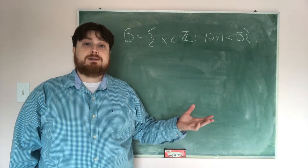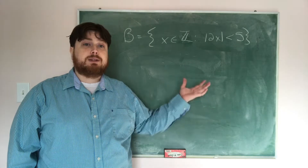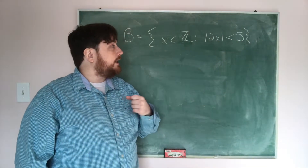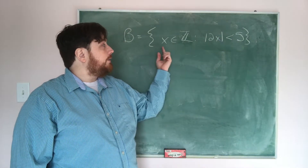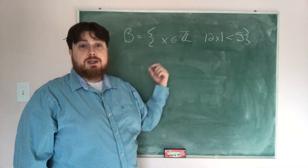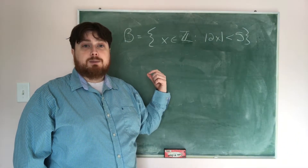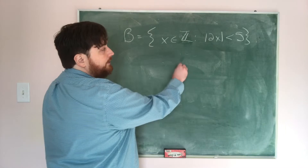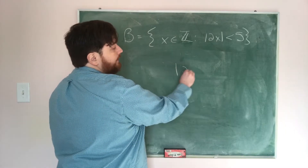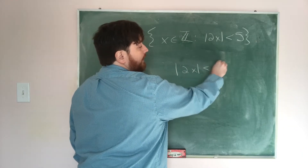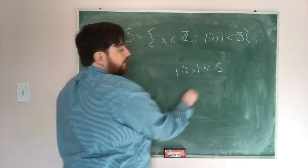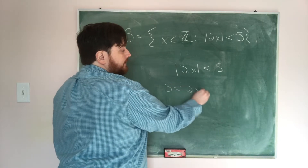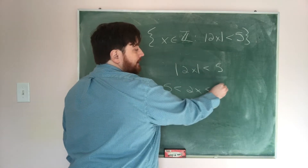If we want to find the elements in this set, we have to find the solutions to this inequality and determine which of those are integers instead of just real numbers. So if we solve the absolute value of 2x is less than 5, we need negative 5 to be less than 2x, which is less than 5.